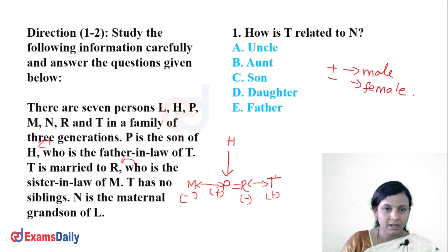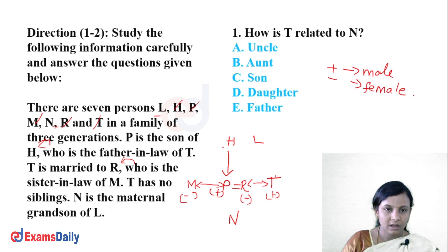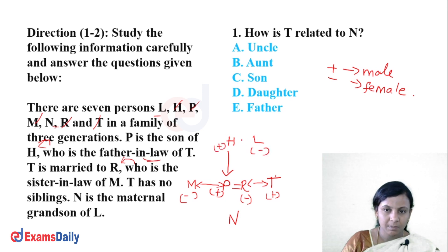N is the maternal grandson of L. So N belongs to the third generation. L is therefore in the first generation. H is male, and L is female — these two are a couple. Since the relation is maternal — meaning through the mother's side — L's daughter's son is N. The remaining members are now placed in the family diagram.